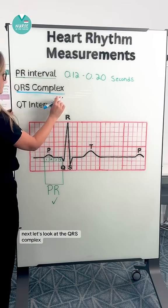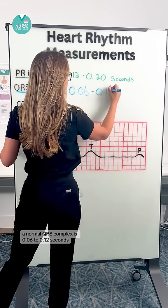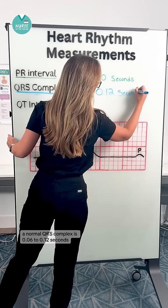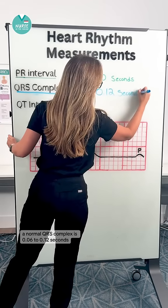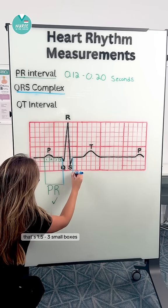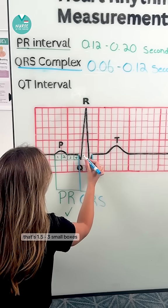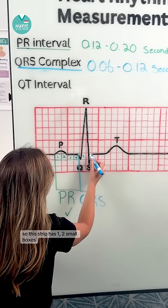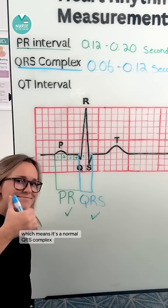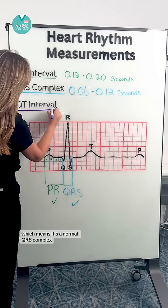Next, let's look at the QRS complex. A normal QRS complex is 0.06 to 0.12 seconds — that's one and a half to three small boxes. This strip has two small boxes, which means it's a normal QRS complex.